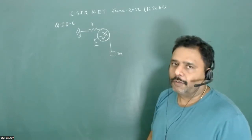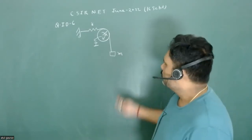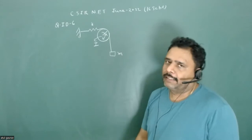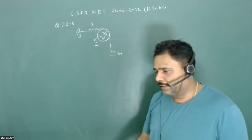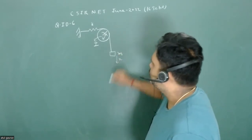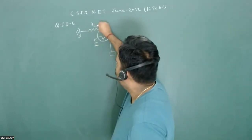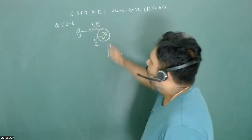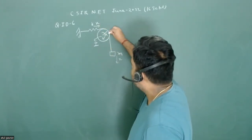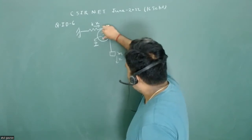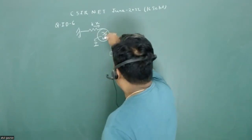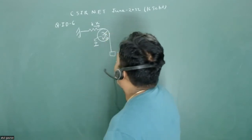We have to write the Lagrangian of the system first, then solve the equation of motion, and approximate it for small oscillations. Suppose the mass moves a distance x — the spring also moves x, and the pulley rotates, acquiring angular velocity omega.